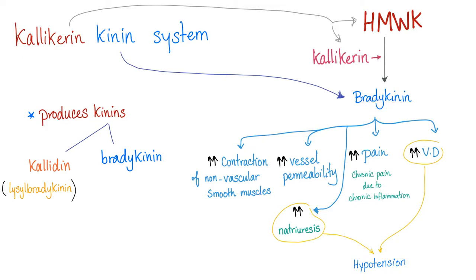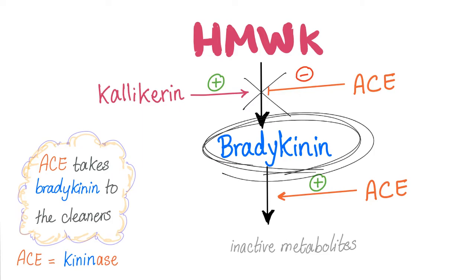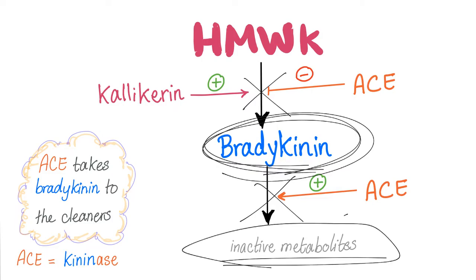Bradykinin is in the plasma; kallidin is in the tissue. High molecular weight kininogen is in the plasma; low molecular weight kininogen is in the tissue. If kallikrein helps high molecular weight kininogen be converted into bradykinin, ACE — angiotensin converting enzyme — prevents this step. And even if you successfully produce some bradykinin, it converts them into useless metabolites. That's why we call ACE a kininase.